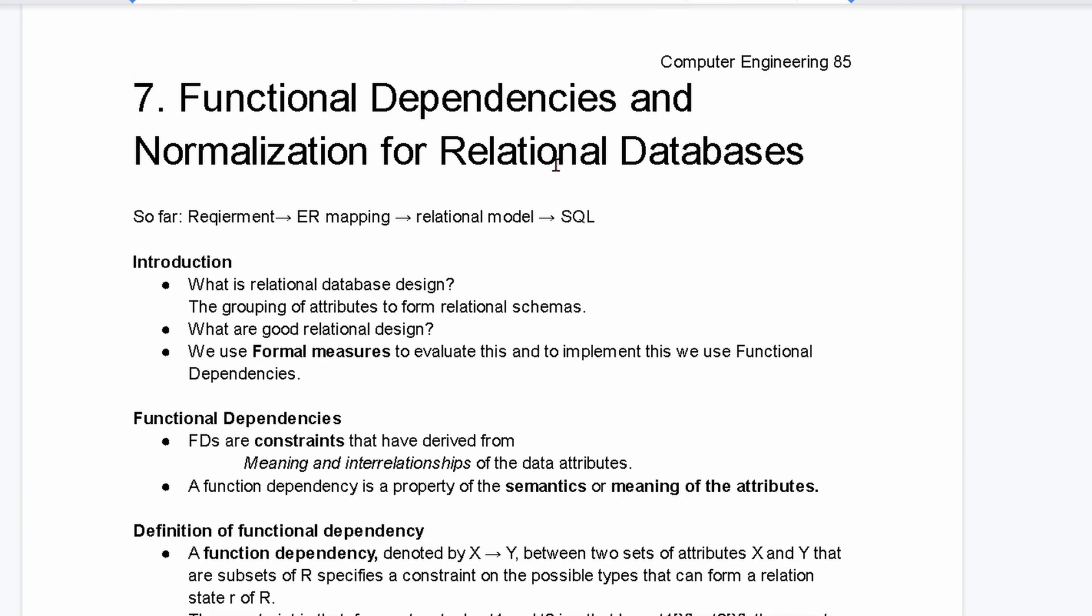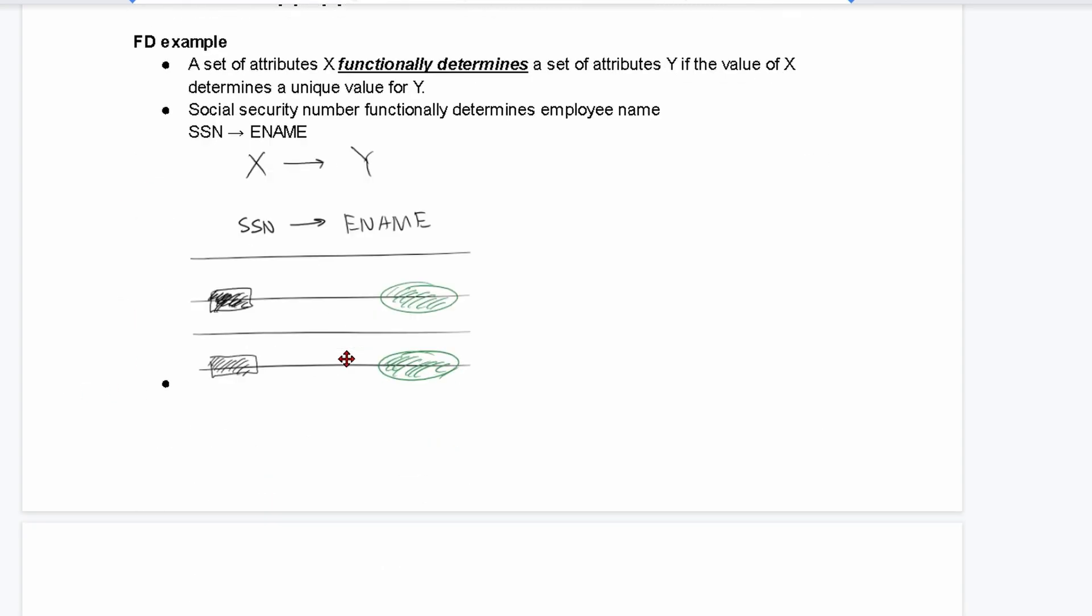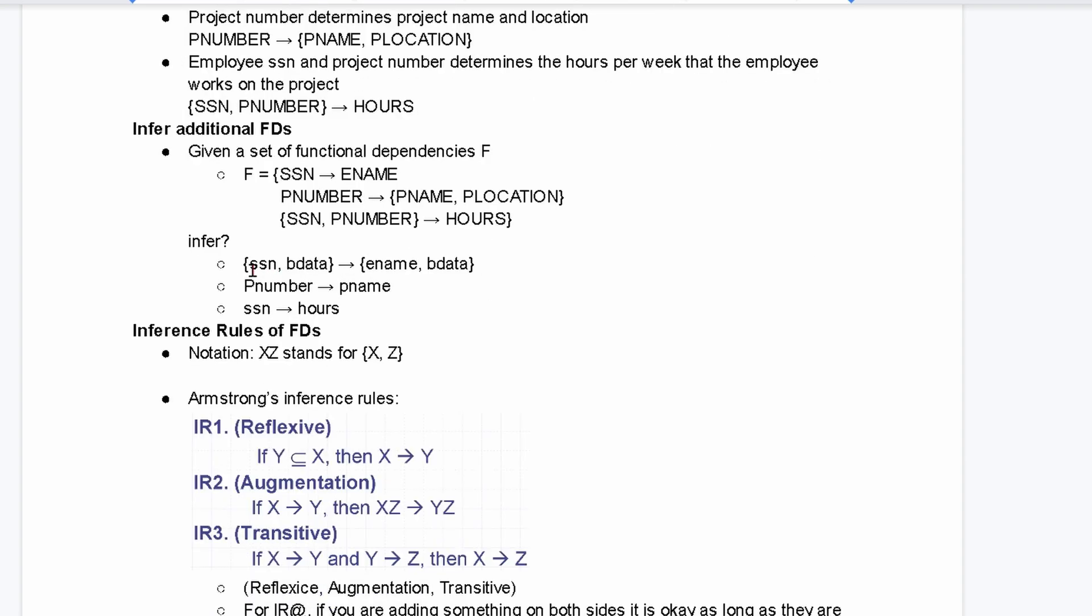We're looking at functional dependencies and normalization for relational databases. Previously, we got introduced to functional dependencies. That's in the playlist link below the like button. But now, we are going to be looking at how to infer additional FDs. FDs are just our functional dependencies.